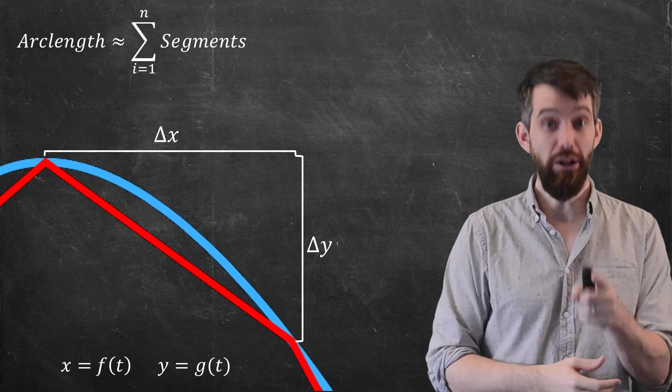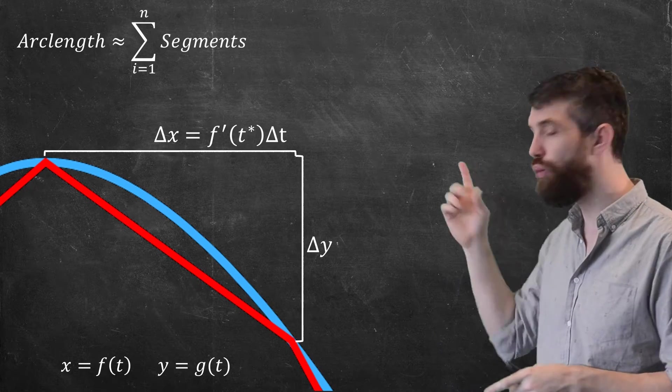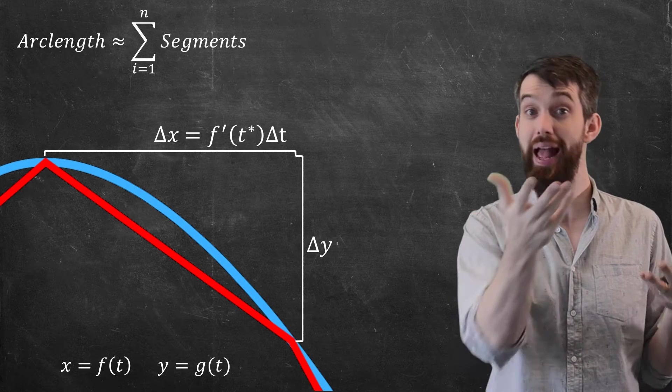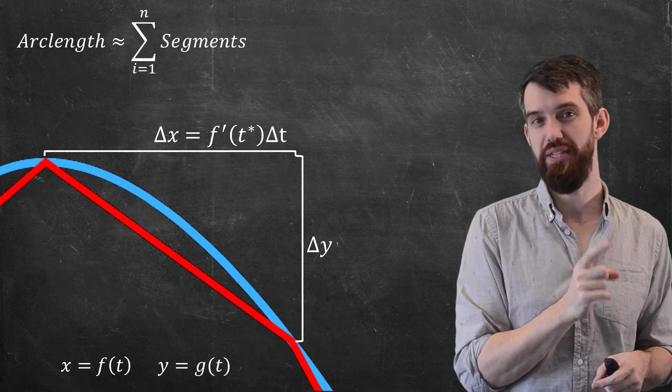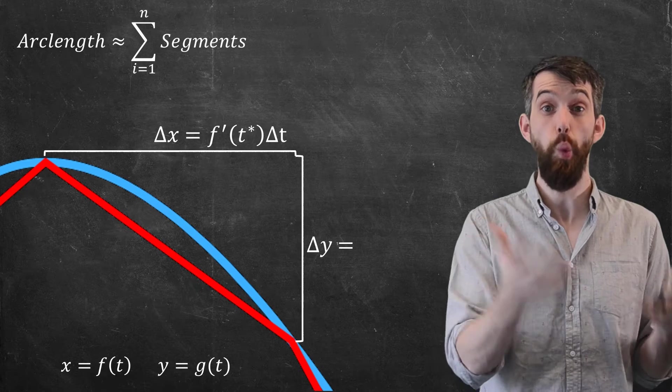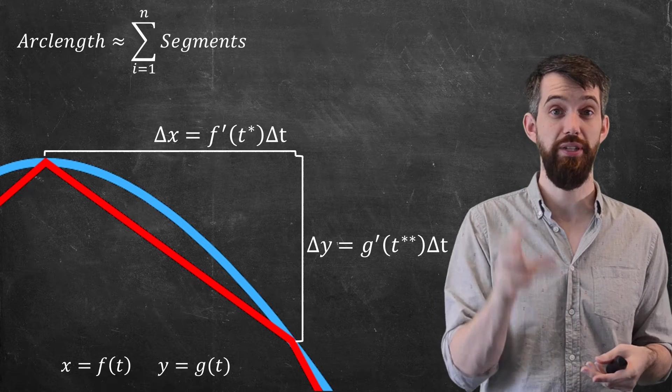So the approximations I'm going to make is, first of all, I'm going to take delta x, and I'm going to write this as the derivative f prime - remember x is equal to f - times delta t. And then my delta y is going to be g prime times delta t.